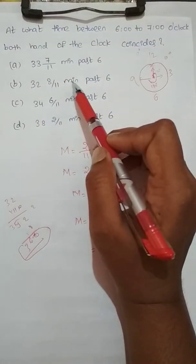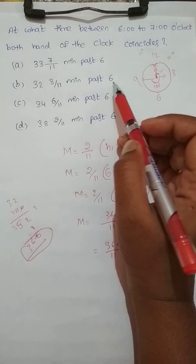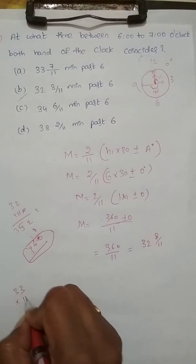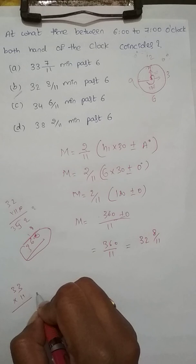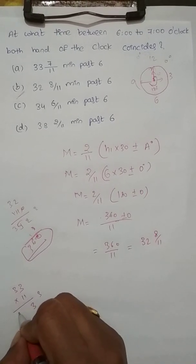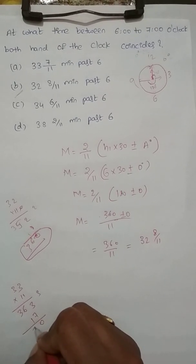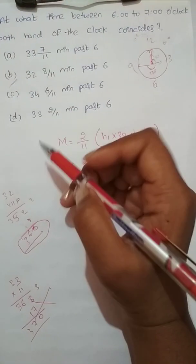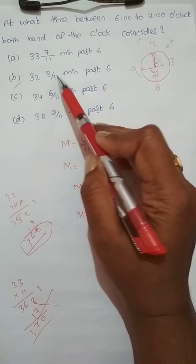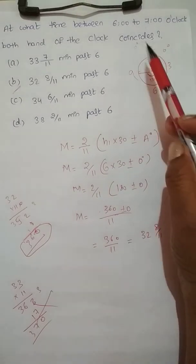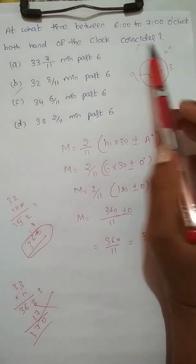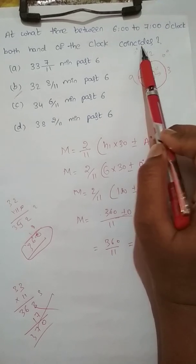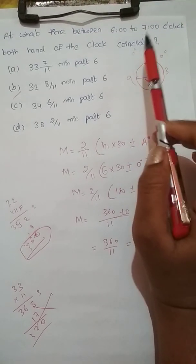So the answer is 32 and 8/11 minutes past 6. We can verify: 33 and 7/11 would give 33 × 11 = 363 + 7 = 370/11, which does not match 360/11, so that is wrong. Therefore 32 and 8/11 minutes is the correct answer.